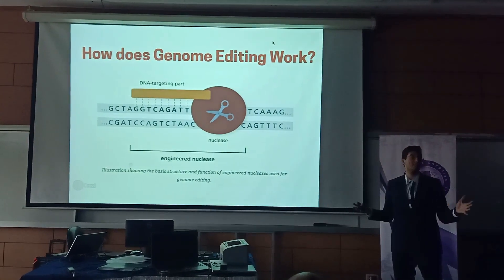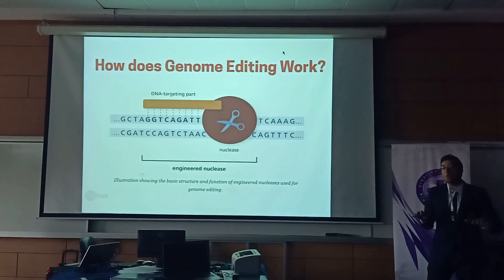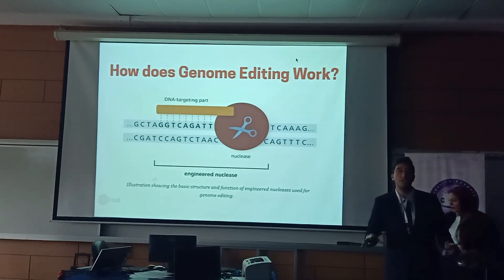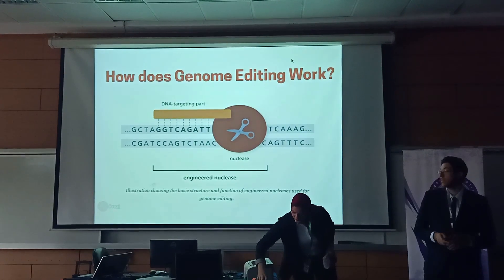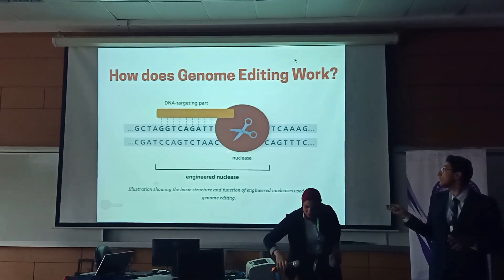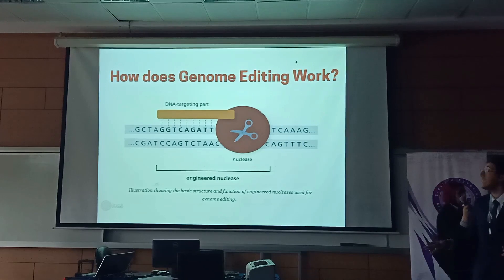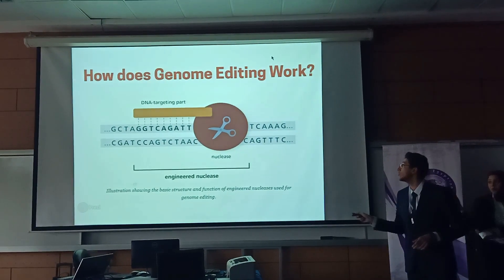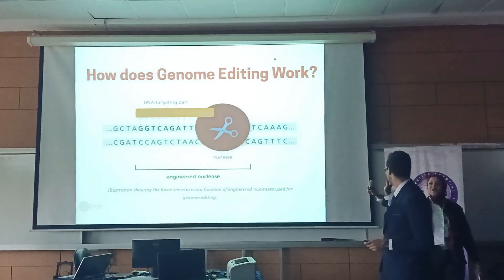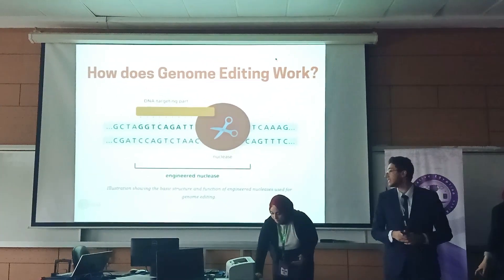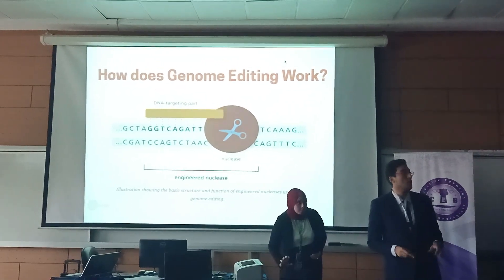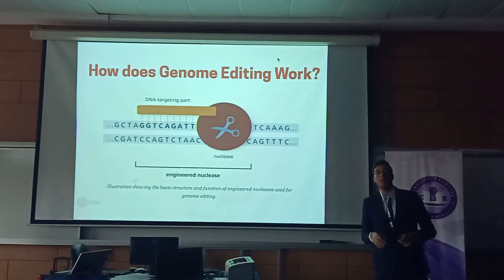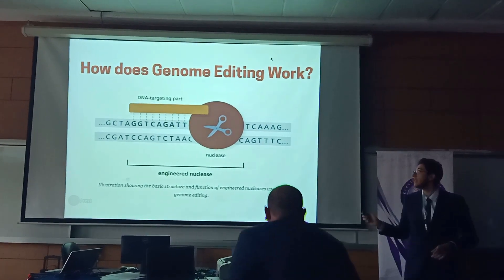How does genome editing work? Genome editing uses a type of enzyme called engineered nucleases. Genome editing nucleases are made up of two parts: the first part is the nuclease part that cuts the DNA at a specific site, and the second part is the DNA targeting part, which guides the nuclease to a specific DNA sequence. Once the cut happens, the cell will naturally repair the damage by homologous recombination and non-homologous recombination pathways, and we can manipulate that to make changes in the DNA.